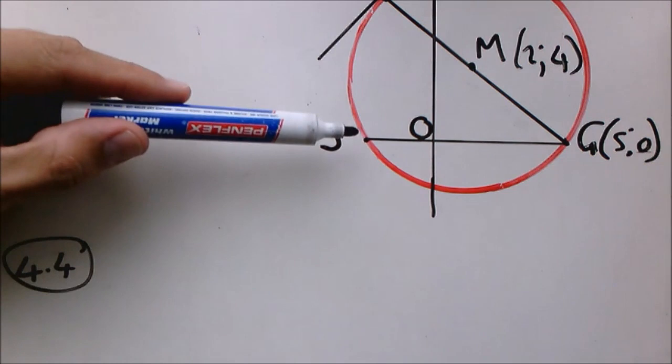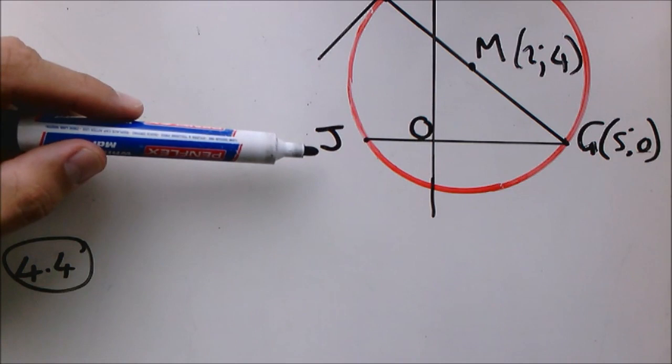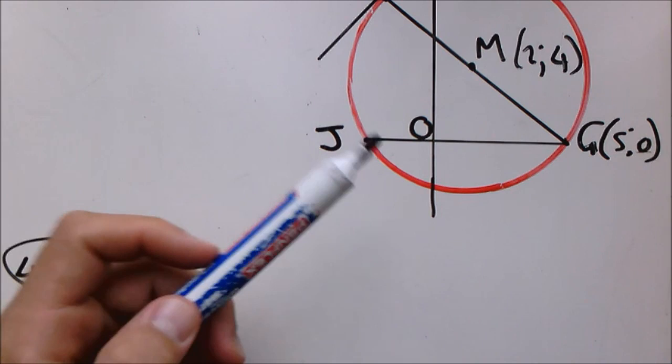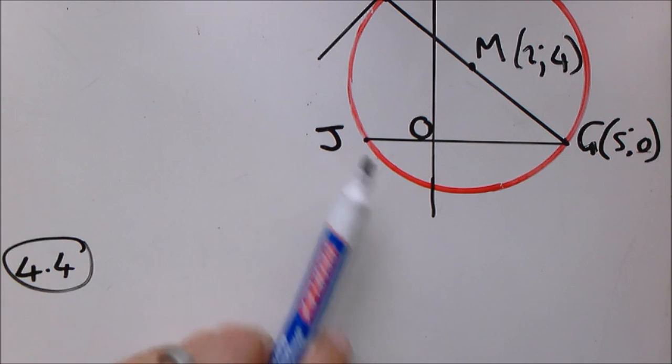So the next question is to calculate the coordinates of J. And you will see that J is on the x-axis. So we know that the y-coordinate of J would automatically be 0 just as with G. So we can use the equation of a circle and substitute y = 0 into the equation. Then we will get two answers: we will get 5 and the x-coordinate of J.